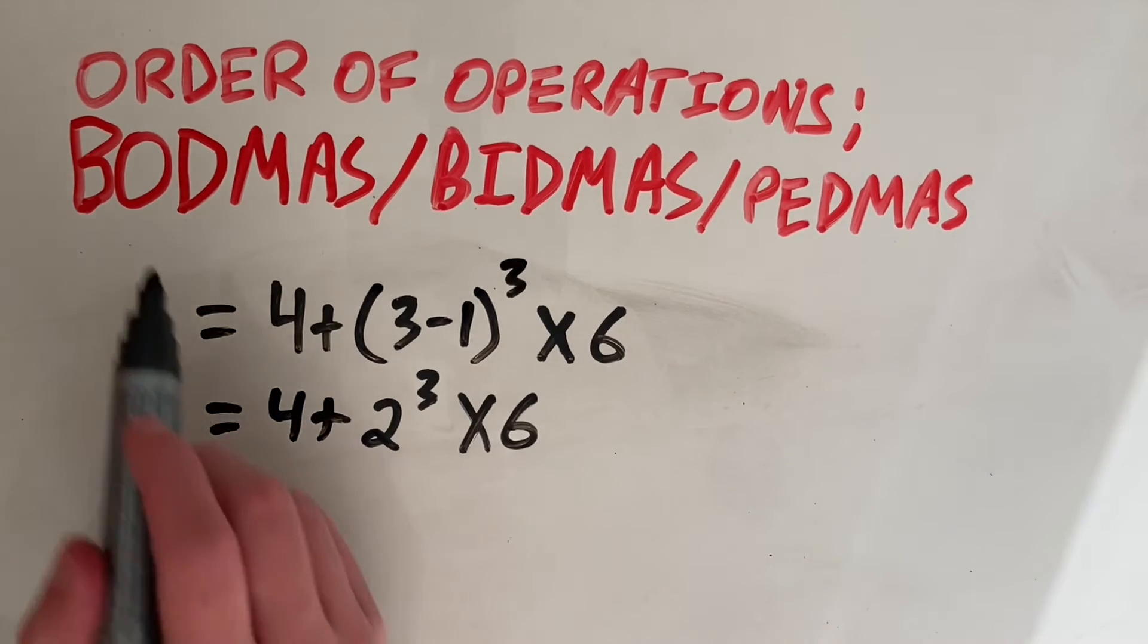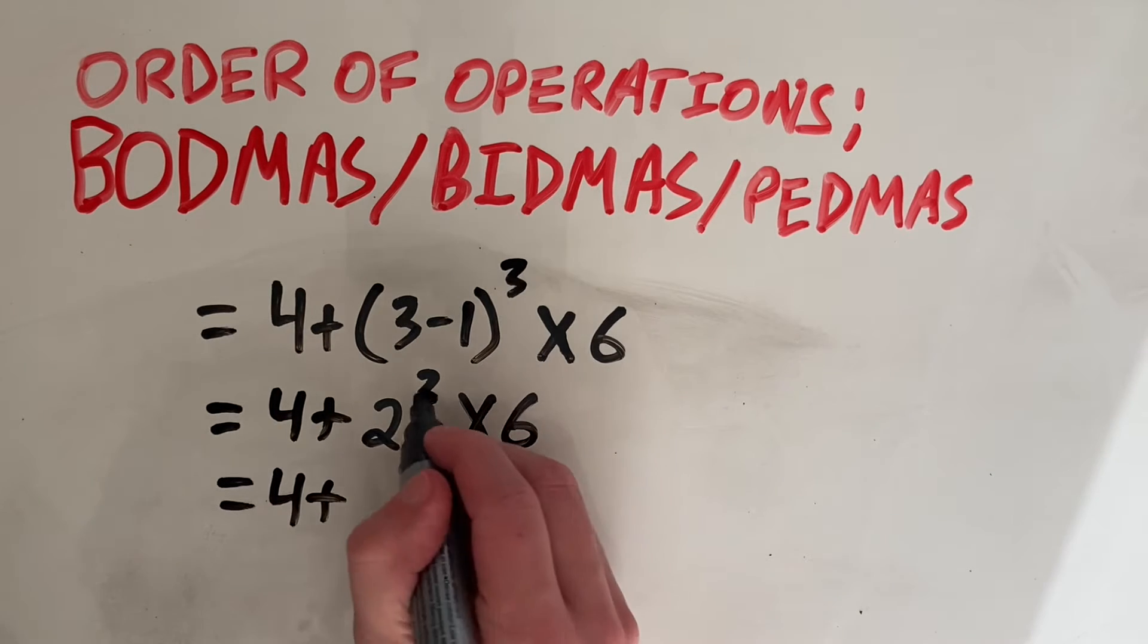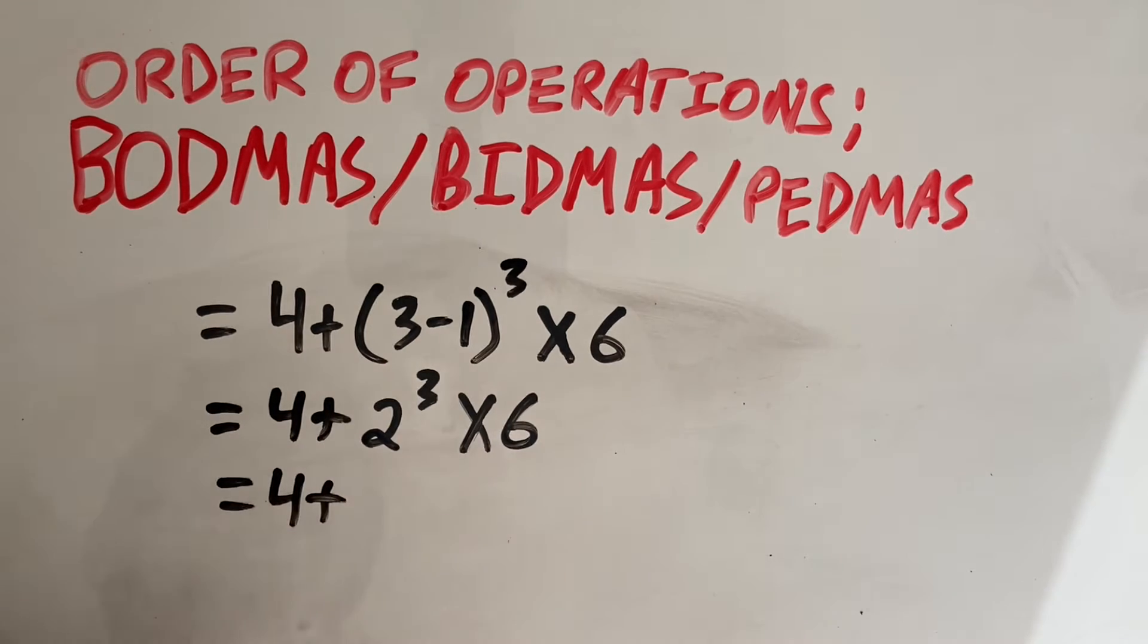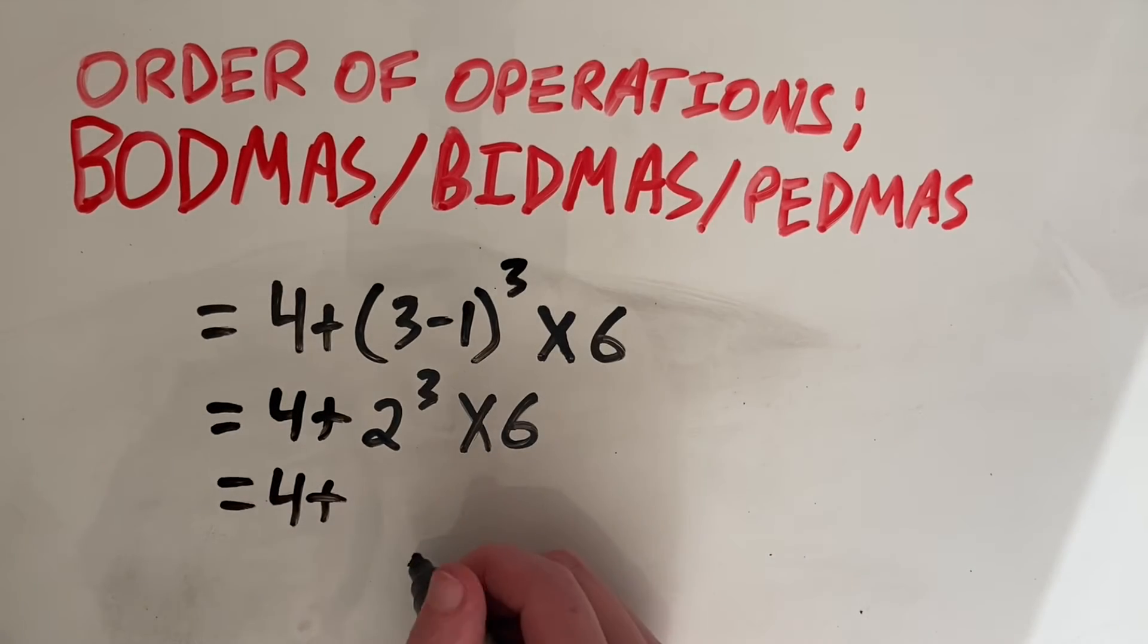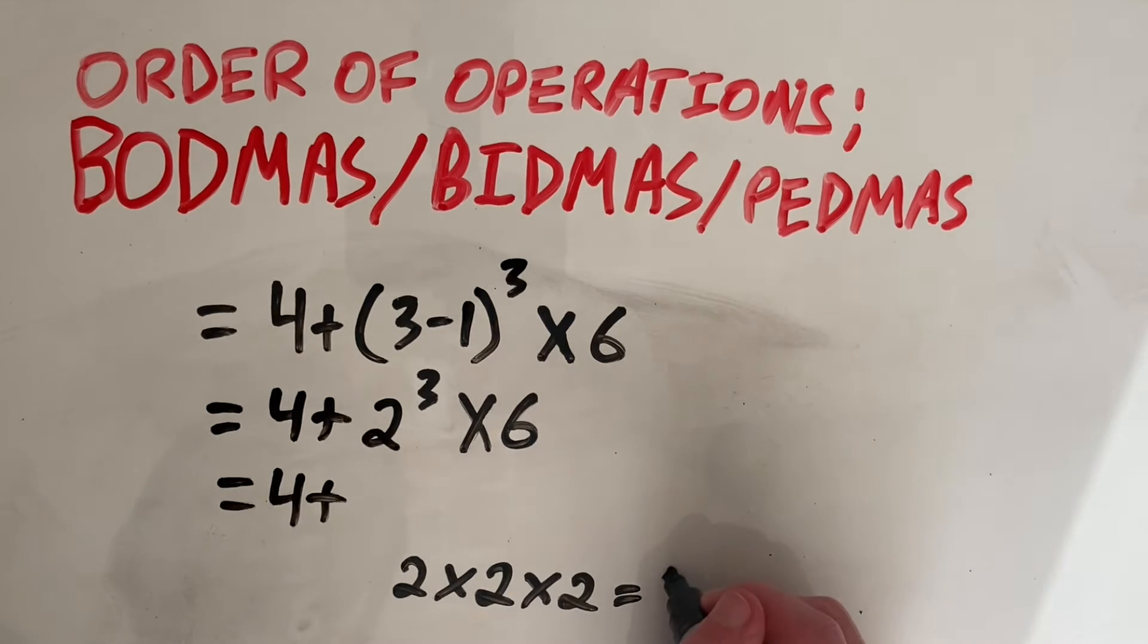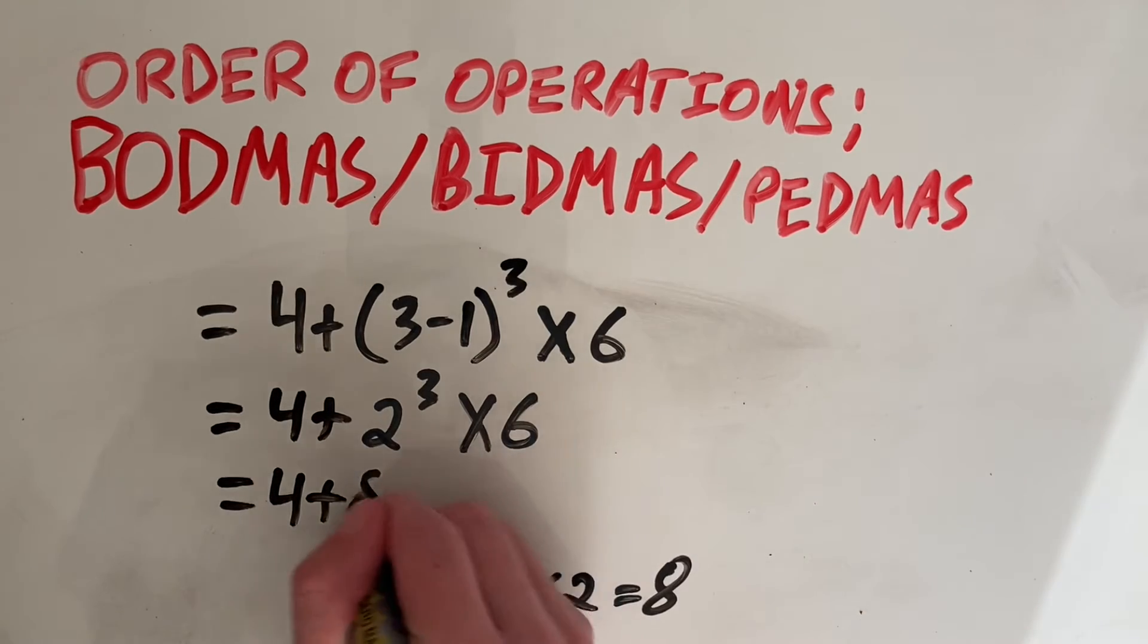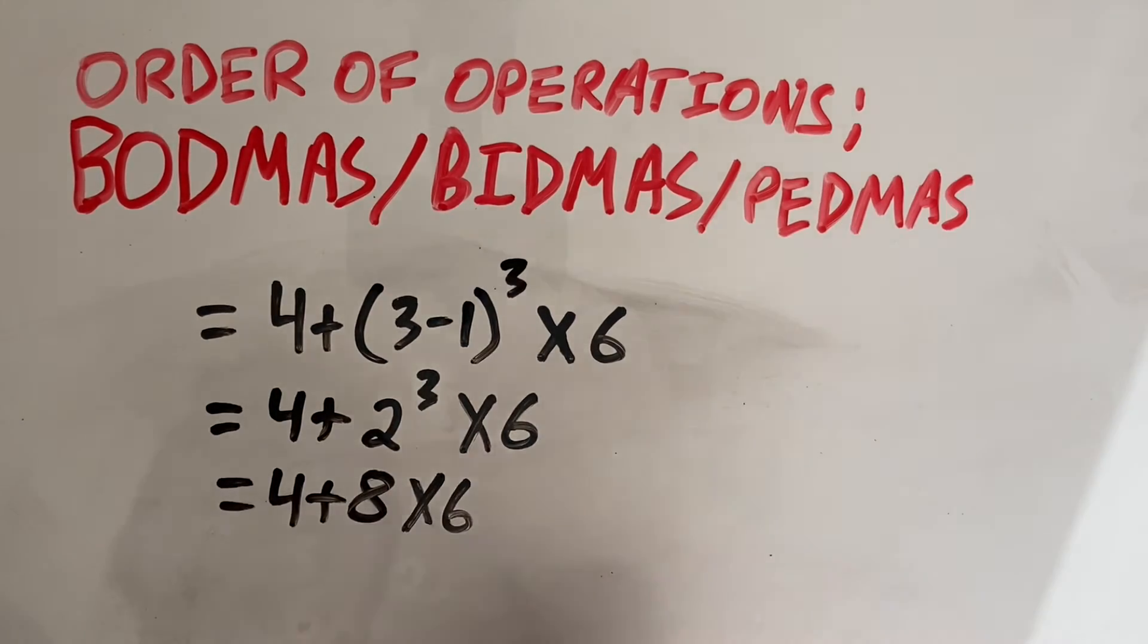Next, we have O, which stands for order. Everything else stays the same. So that 4 stays out front. And we do the exponent. So 2 to the power of 3. That just means the base number multiplied by itself, the number of times the power is. So that's 3 times. So we have 2 times 2 times 2. 2 times 2 is 4 times 2 is 8. And we'll keep everything else the same because it's best not to skip steps when you're getting started.